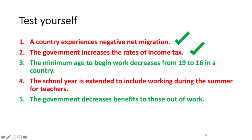If the minimum age to begin work decreases, then the amount of people available for work will increase, thus raising labour supply and shifting the curve rightwards. Fourth, if the non-pecuniary benefits of teaching are reduced, then the number of people willing to be teachers will likely fall, and labour supply in this market will decrease and shift left. Finally, if the government decreases benefits to those out of work, they are more likely to supply their labour, thus increasing the supply of labour and shifting it rightwards.